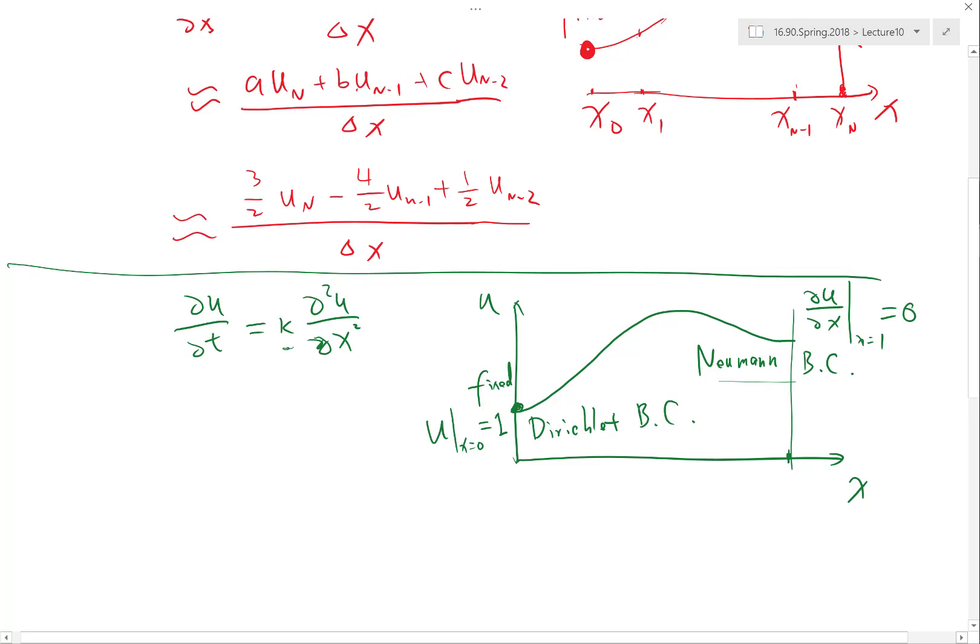Dirichlet boundary condition means you are fixing. You are setting the deformation, for example, to zero. You are fixing a location on the solid, not allowing it to move.